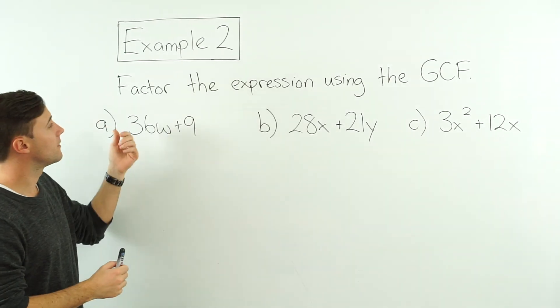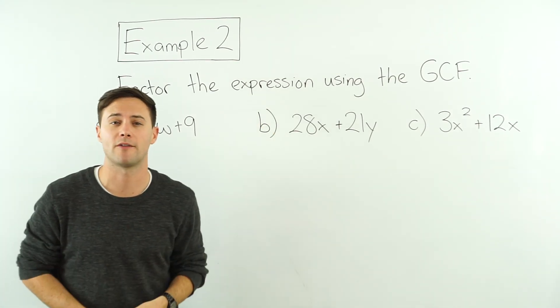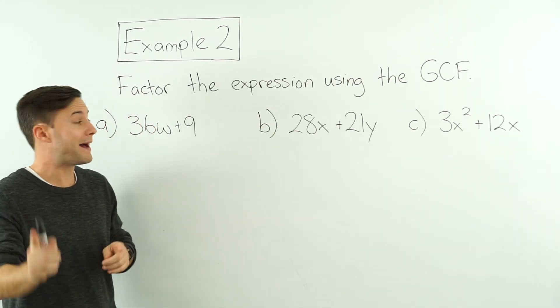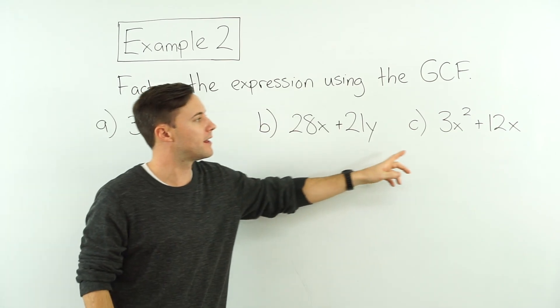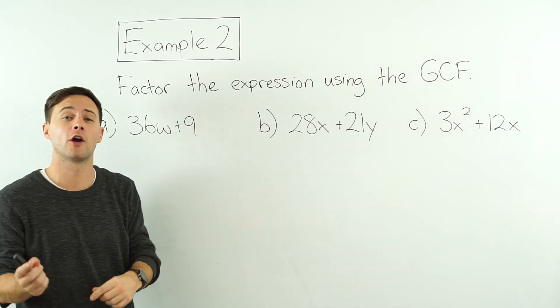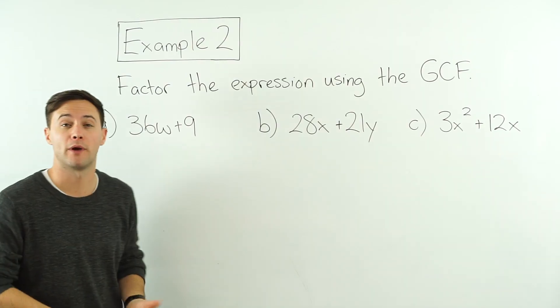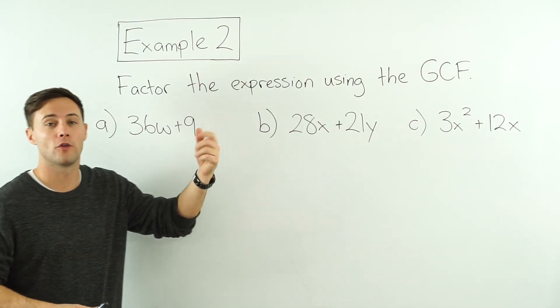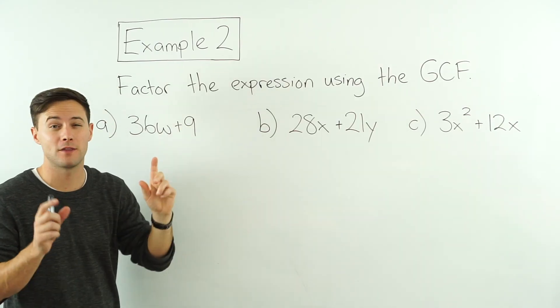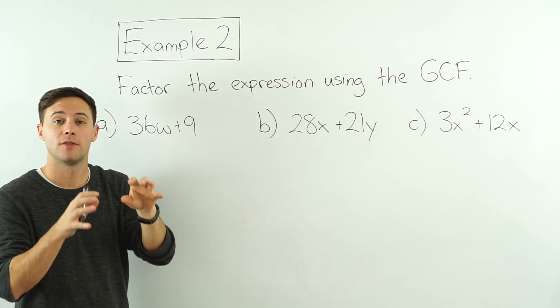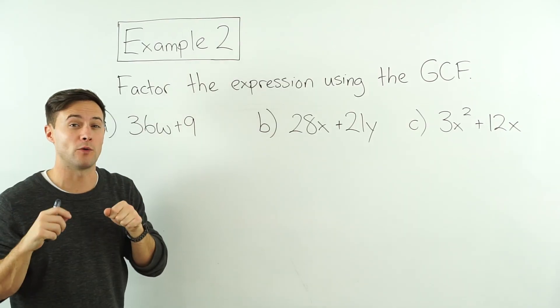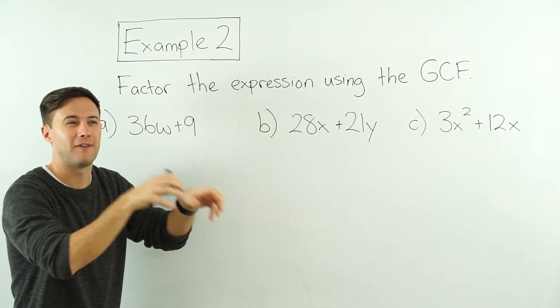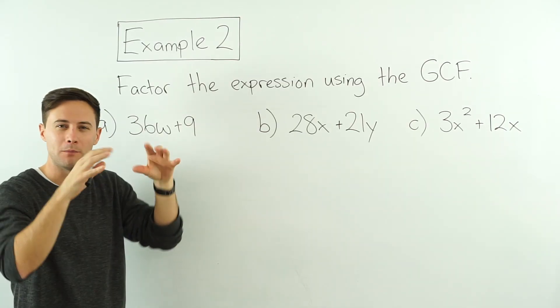Here's example two. Factor the expression using the GCF. So we're still factoring. However, you'll probably notice that these examples are no longer numerical expressions. Now we're using algebraic expressions. But we do the exact same thing. We're looking for those common factors, and specifically the greatest common factor that we can factor out of the expression or divide out. And then we make those parentheses.